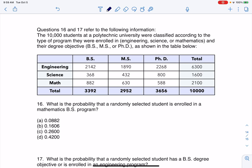Hey everyone, let's take a look at number 16. There are 10,000 students at a polytechnic university that were classified according to the type of program they were enrolled in.